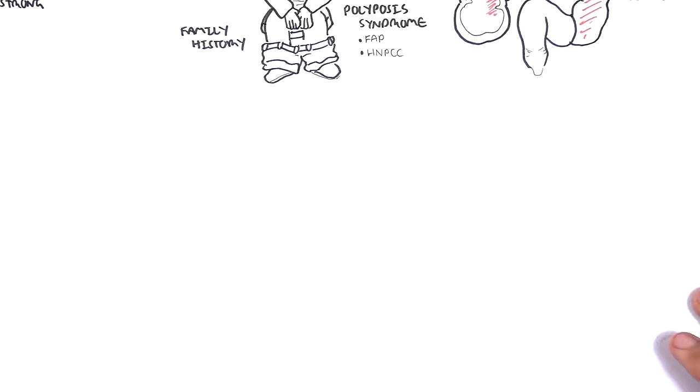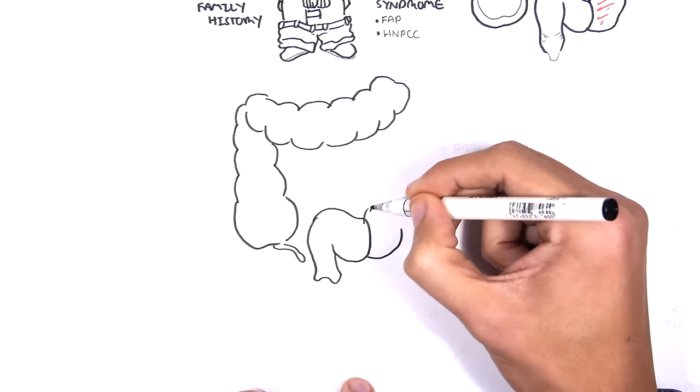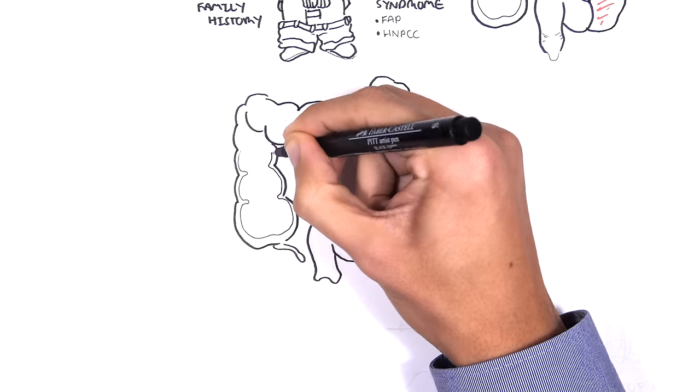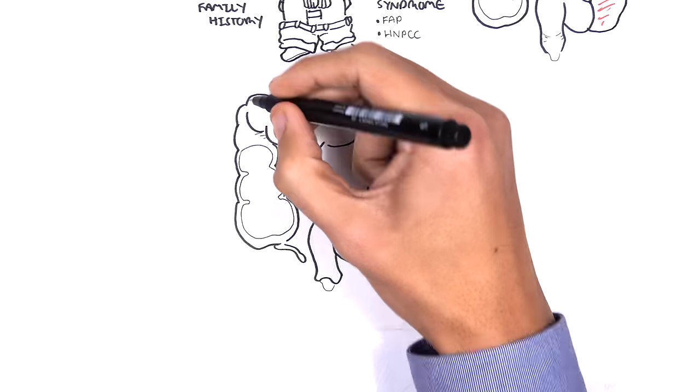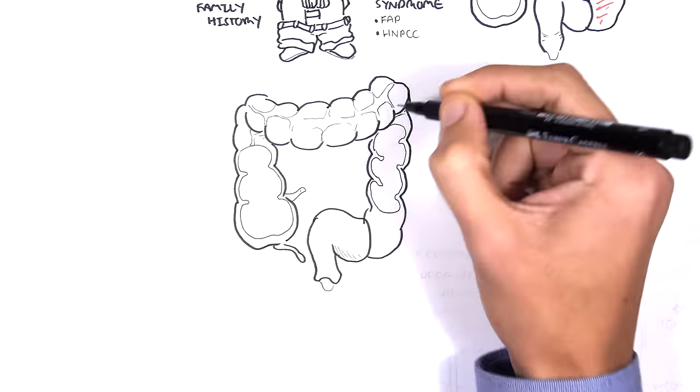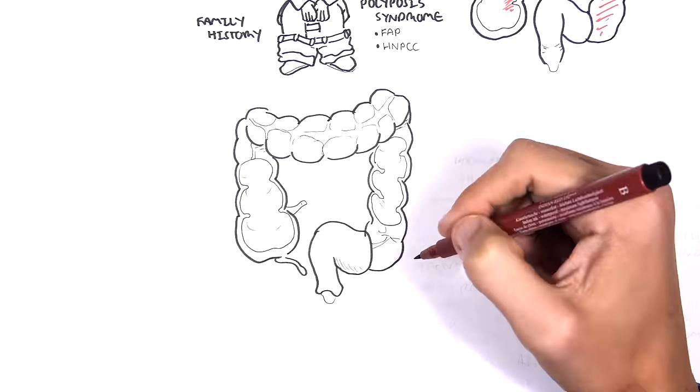The signs and symptoms or clinical presentation differ depending on where the cancer or growth occurs within the bowel. Of course this is just a summary. People vary in their clinical presentation. So here I'm drawing a colon. Ascending, transverse, descending, sigmoid, and the rectum.